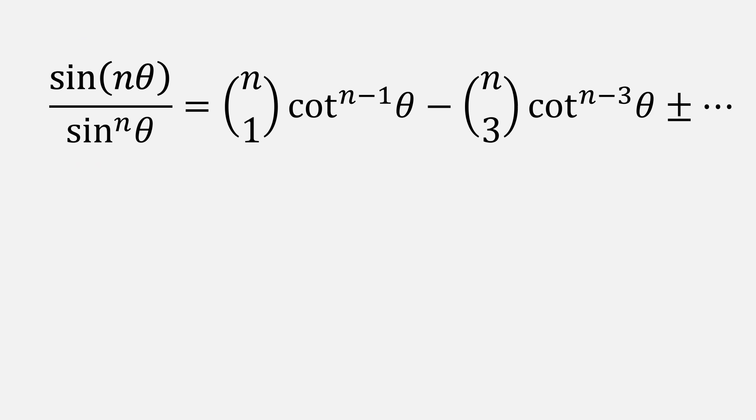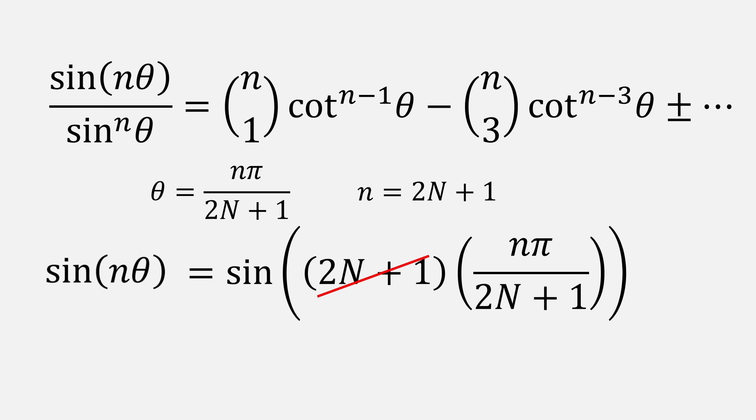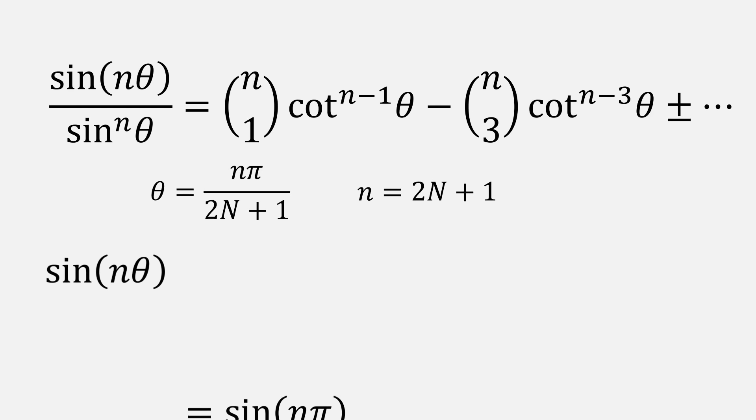Remember earlier, we made the substitution n pi over 2n plus 1. We're also going to replace n with 2 times big n plus 1. Notice what happens if I substitute those two expressions in for sin n theta. The 2n plus 1s cancel out, leaving us with sin n pi. And since n is an integer, sin n pi is always equal to 0.